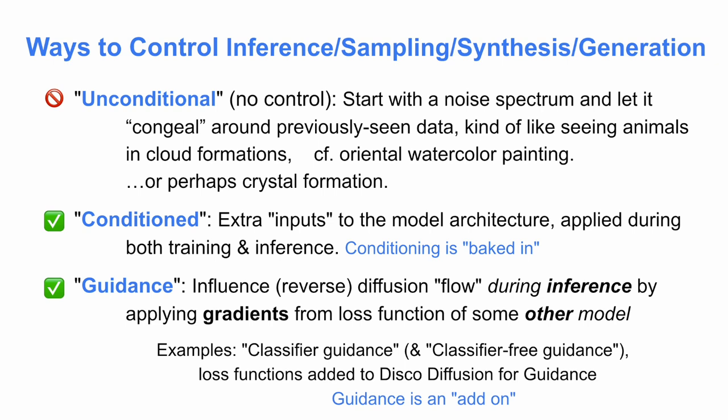Other options are conditioning and guidance. For a conditioned model, you have additional inputs built into the model architecture — direct connections like knobs or sliders hooked into the middle or start of the model. Conditioning is applied during both training and inference. In contrast, guidance is kind of an add-on — something whereby you can influence the inference process, the reverse diffusion flow, by applying gradients from some loss function of another model. You can tack on another model like a plug-in. This was done to great effect with Disco Diffusion, whether using classifier guidance or classifier-free guidance.